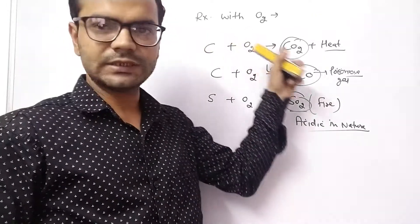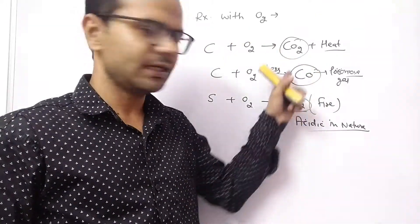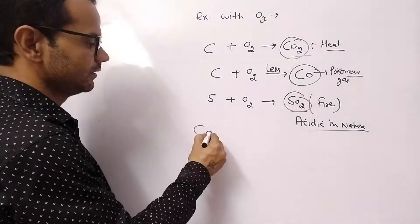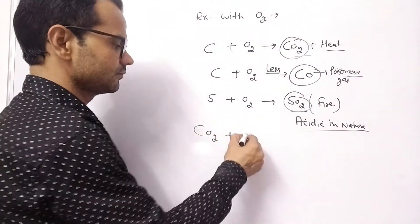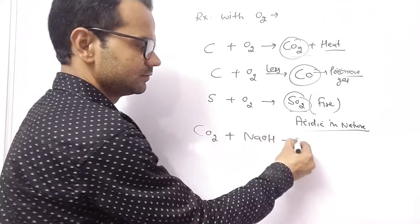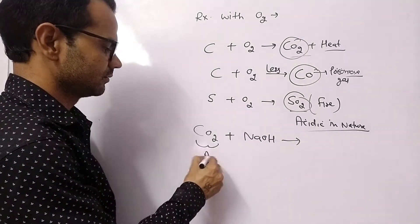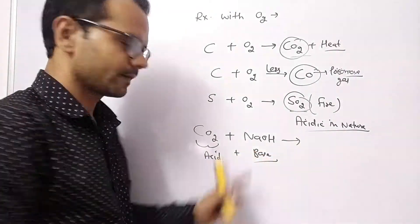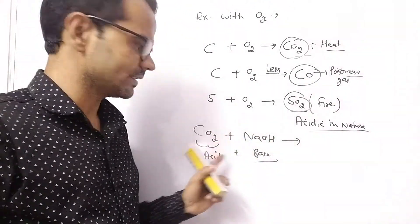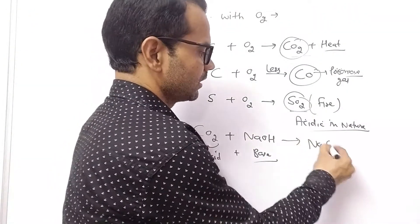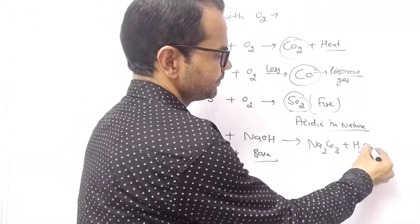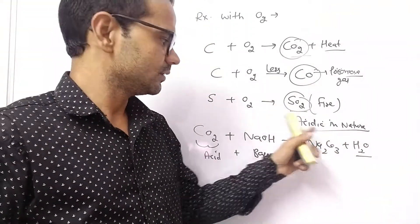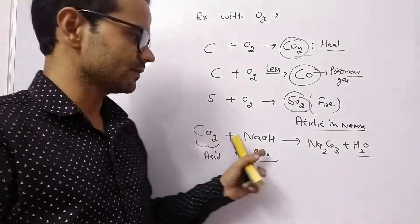Non-metal oxides are acidic in nature, which means they can react with a base. If we react non-metal oxides with NaOH — the oxide being the acid and NaOH being the base — a reaction takes place between the acid and the base.